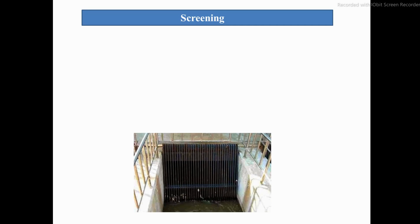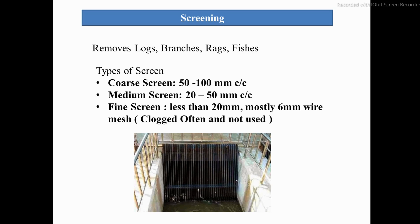First, what is screening and why is screening needed? Screening removes logs, branches, rags, and feces so that they do not enter into the treatment plant. The types of screens are coarse screen, medium screen, and fine screen. The coarse screen has a center-to-center spacing of 50 to 100 mm, the medium screen 20 to 50 mm, and the fine screen less than 20 mm.